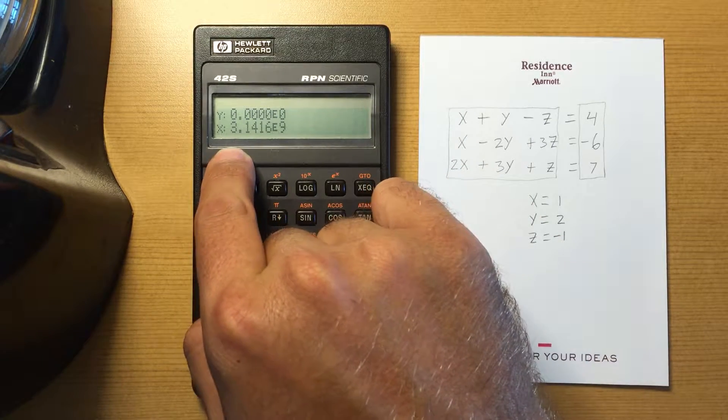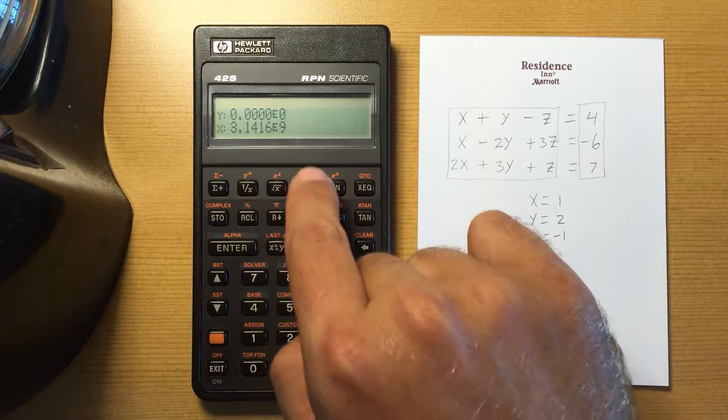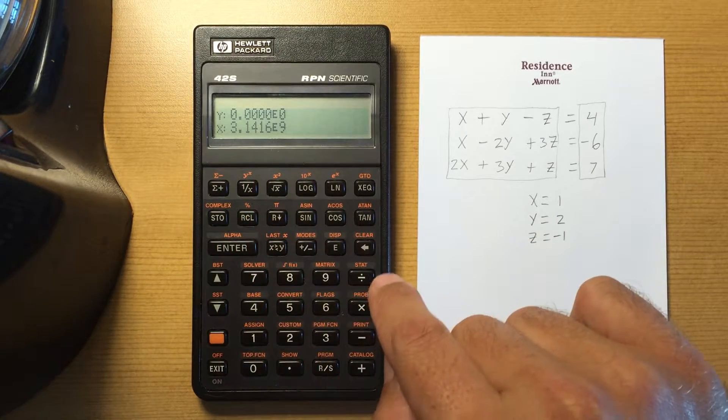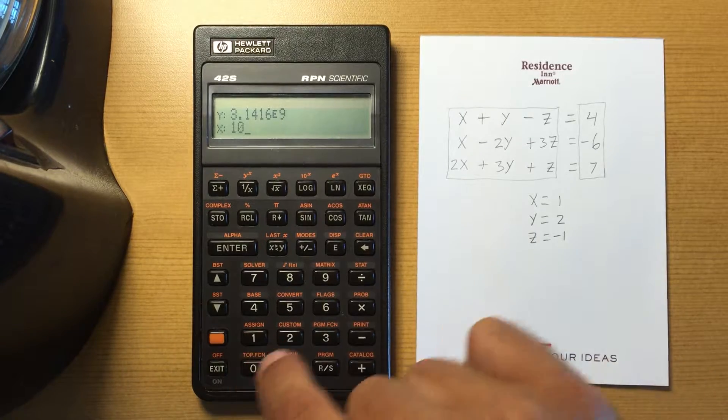And then it'll show the exponent notation. If I divide that by 10, it's going to still hold to the eighth.